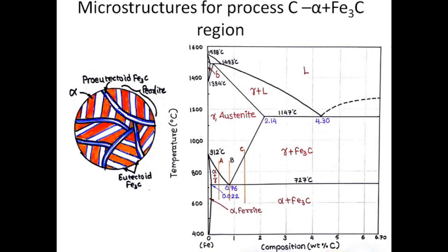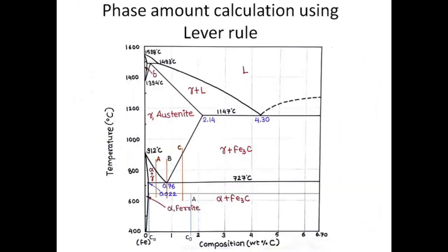This was about the microstructures observed on the iron-iron carbide diagram. Now let us see how to find phase amount on this diagram. We can use the lever rule to find phase amount on any phase diagram. Let us fix a point at which we want to find phase amount — let us say the composition at this point is C0. As per the procedure of the lever rule, we draw a horizontal tie line passing through the point of interest, ending at the solvus line or the end of the phase diagram.